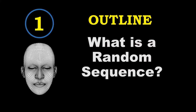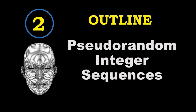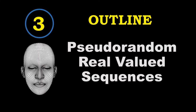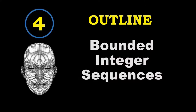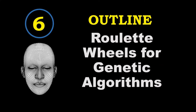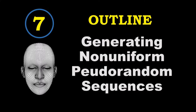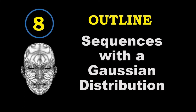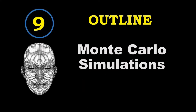Let's see an outline of the presentation. First we're going to look at what is a random sequence, then some pseudo random integer sequence generators, then how to convert them into real-valued sequences, followed by bounded integer sequences, randomized permutations, roulette wheel simulations for genetic algorithms, generating non-uniform pseudo random sequences including Gaussian distributions, and finally Monte Carlo simulations with one example.